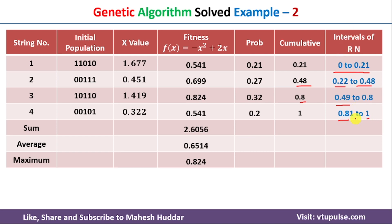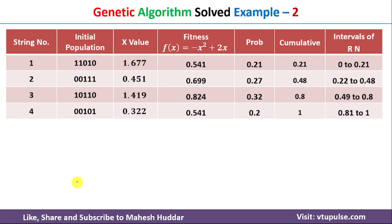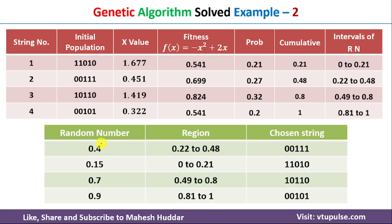Using the given random numbers — 0.4, 0.15, 0.7, and 0.9 — we select chromosomes. Random number 0.4 falls in the range 0.22–0.48, so chromosome 00111 is selected. Random number 0.15 falls in the range 0–0.21, selecting the corresponding chromosome. The remaining two chromosomes are selected similarly using 0.7 and 0.9.